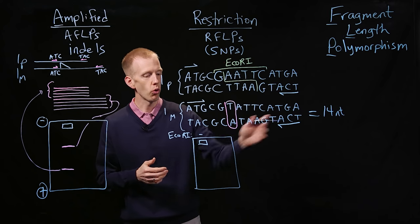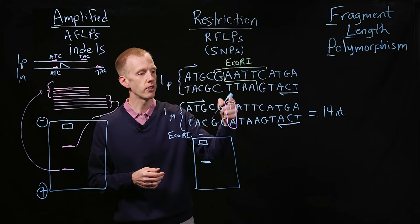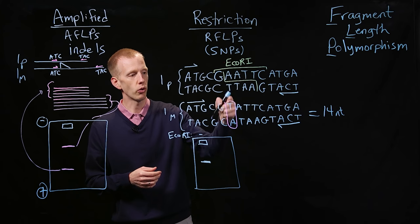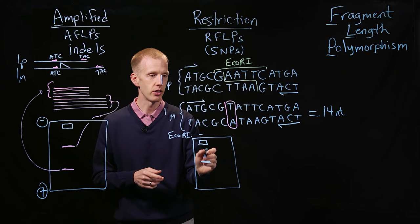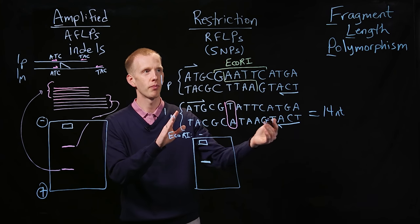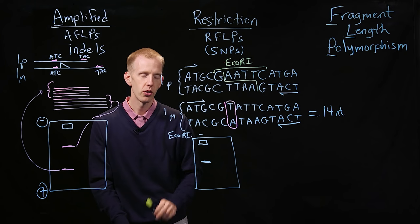Is there a size difference between the paternal and the maternal amplicons from PCR? No, they're both 14 nucleotides long. So even though this individual is heterozygous at this position, they've got an A on one chromosome and a T on the other, we can't detect that by PCR because the fragments that are produced are not yet polymorphic.